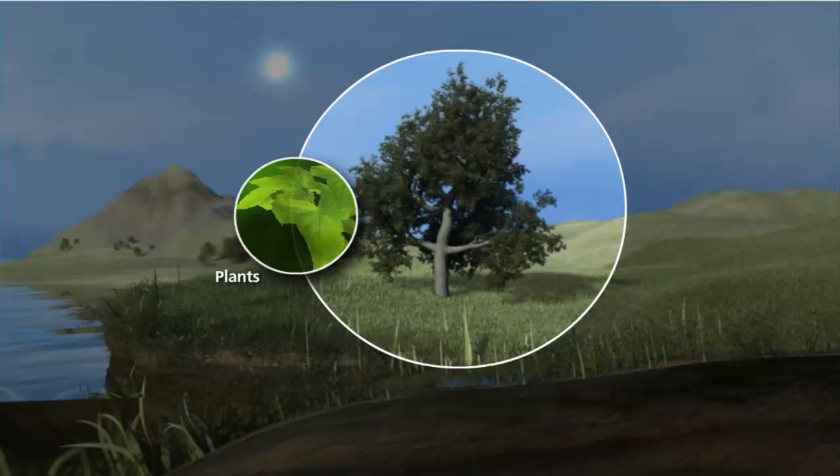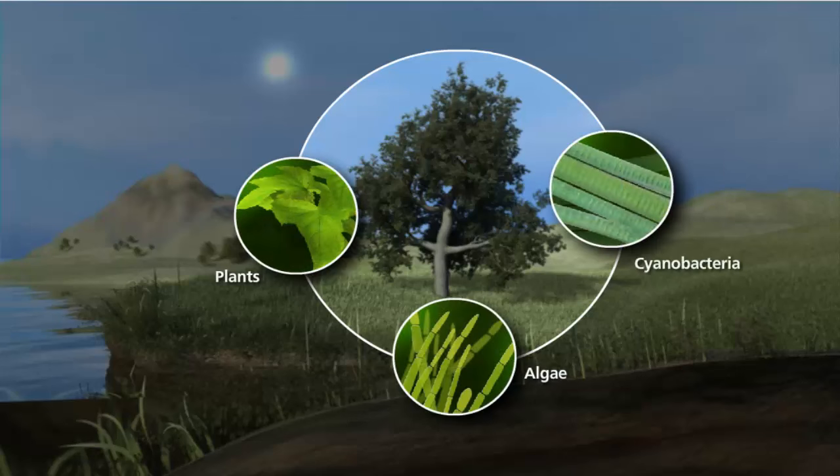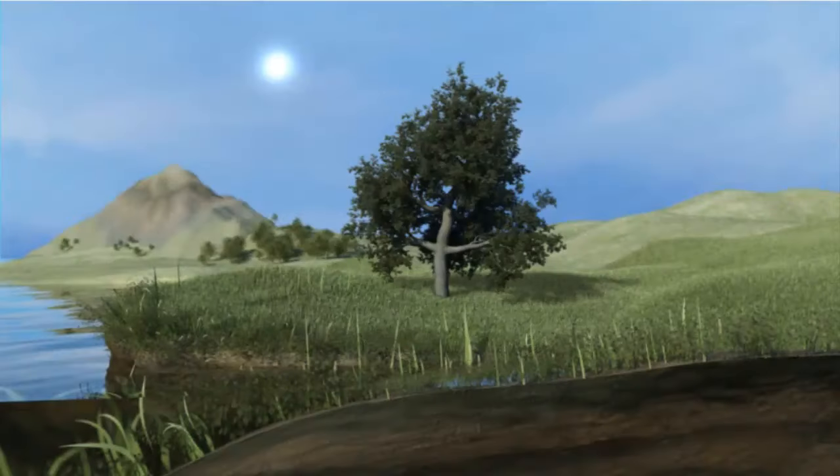A tree, like all plants, algae, and cyanobacteria, is an autotroph, an organism that produces its own food from inorganic molecules to facilitate growth.